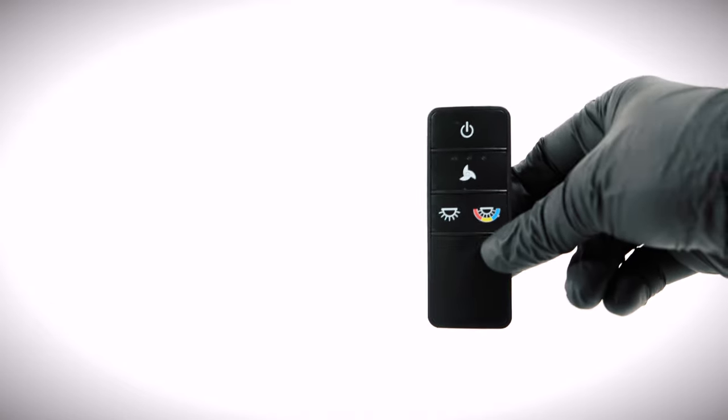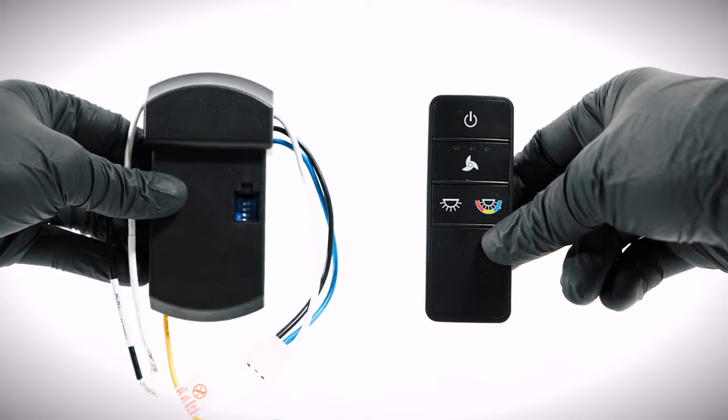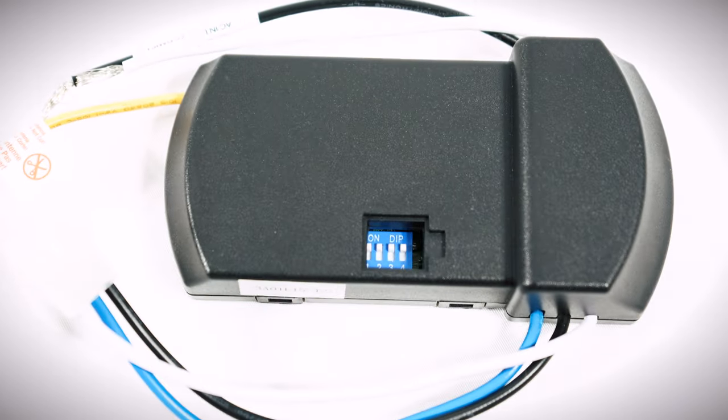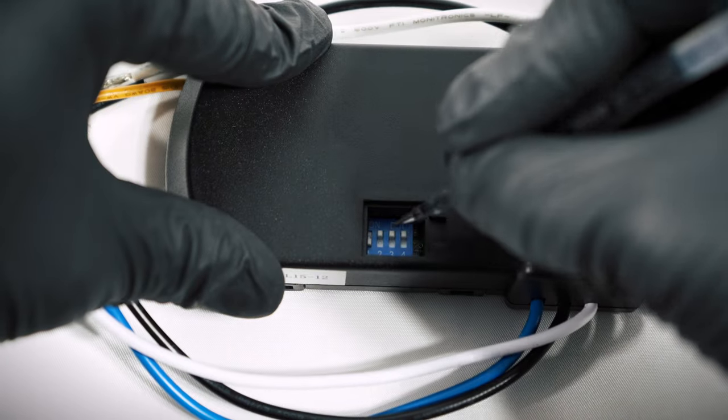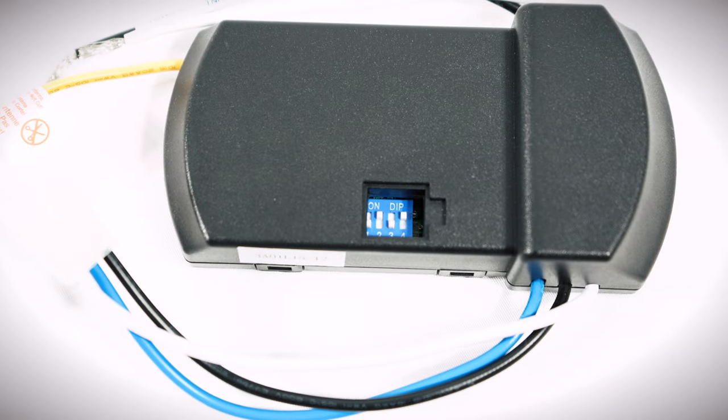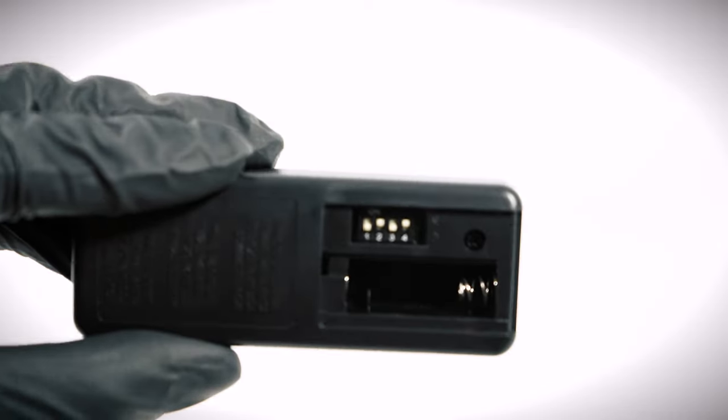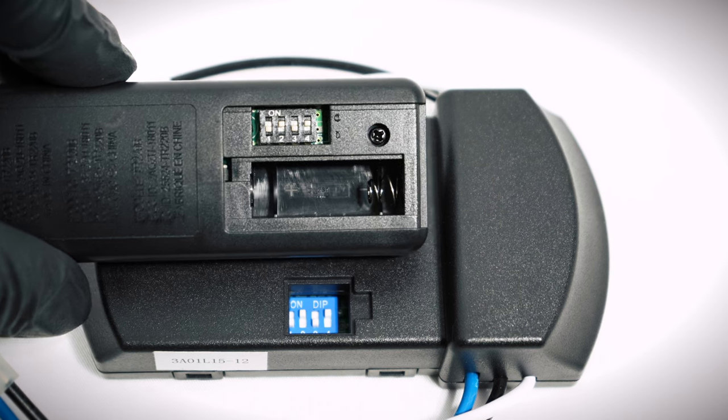To avoid interference from other fans or devices, you can set the frequency code in the remote and the receiver. Locate the dip switches on the receiver. Flip the dip switches to create a new and unique code. Access the battery compartment of the remote and duplicate the code. The dip switch codes must match or the fan will not function.